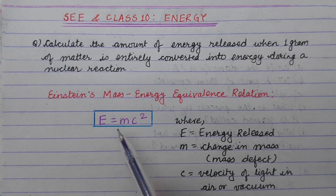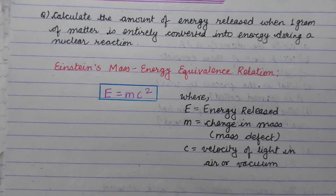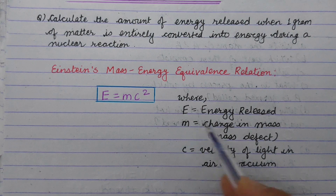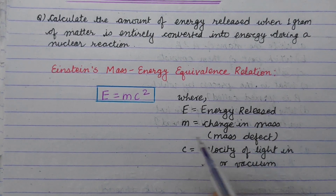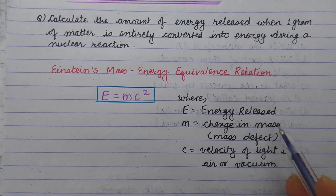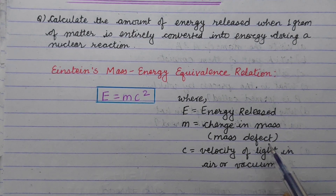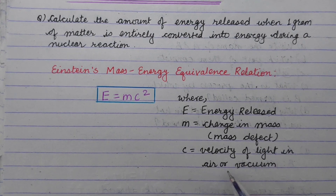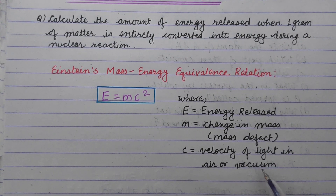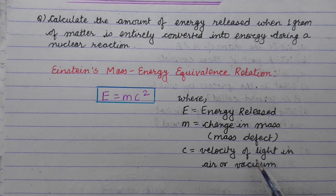Now, E, m, and c are the variables. E is the energy released. M is the change in mass, also called mass defect. C is the velocity of light in air or vacuum, which is 3 into 10 to the power 8 meters per second.